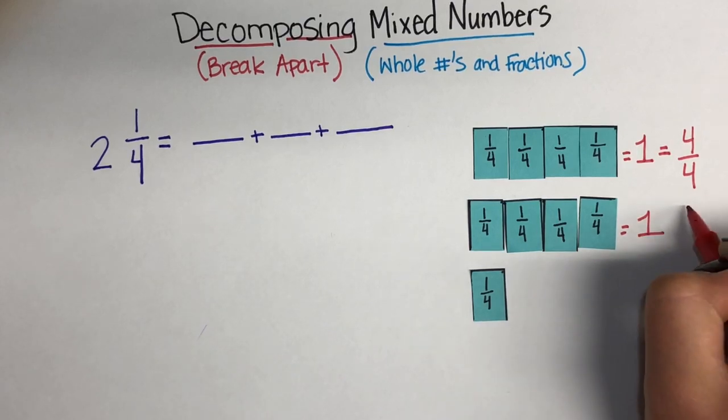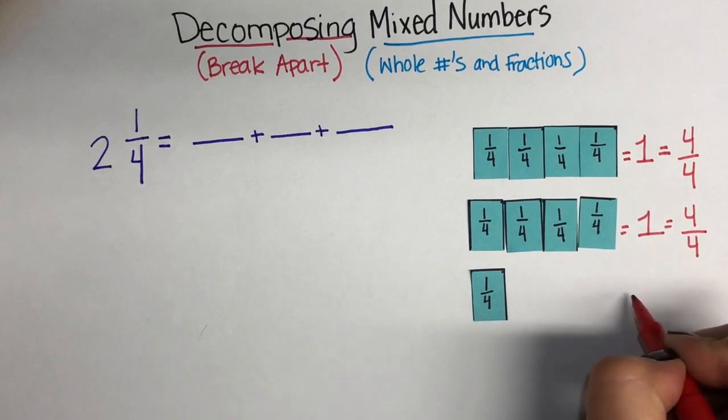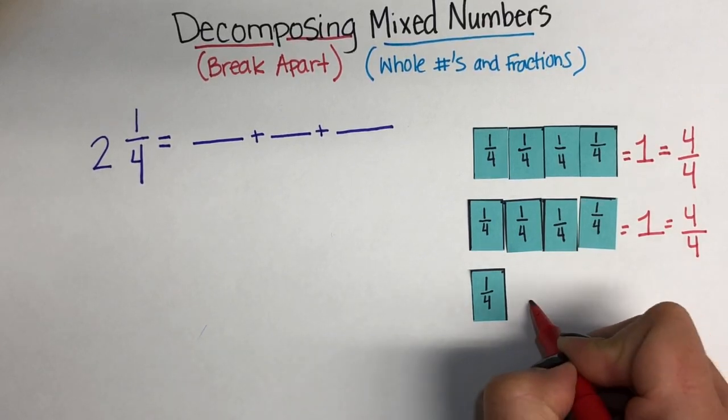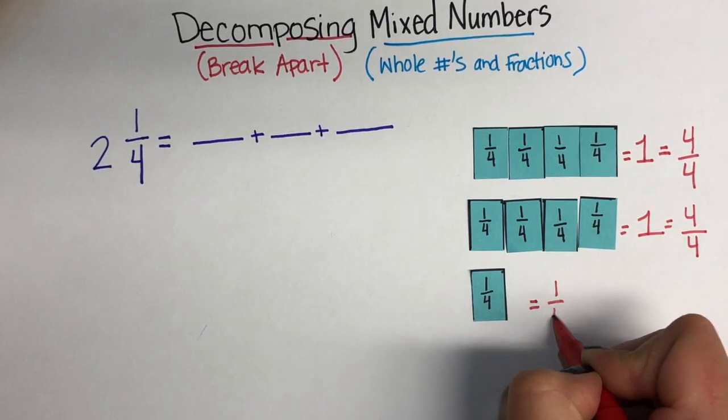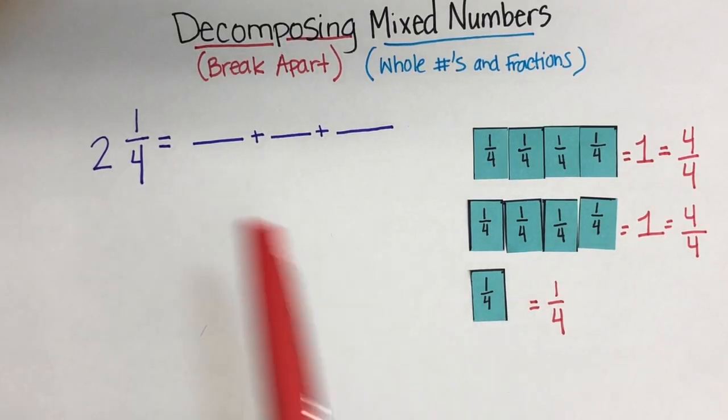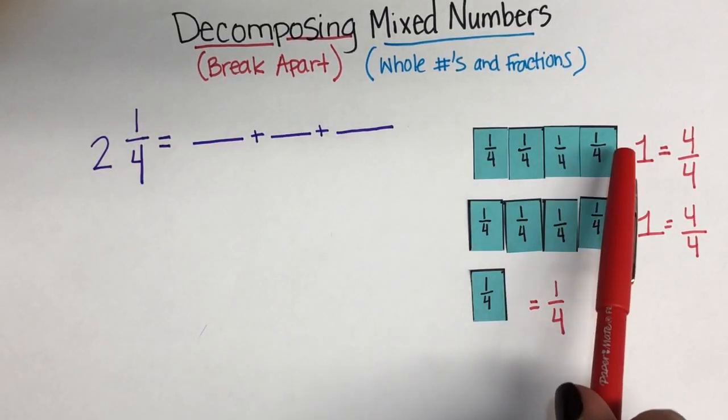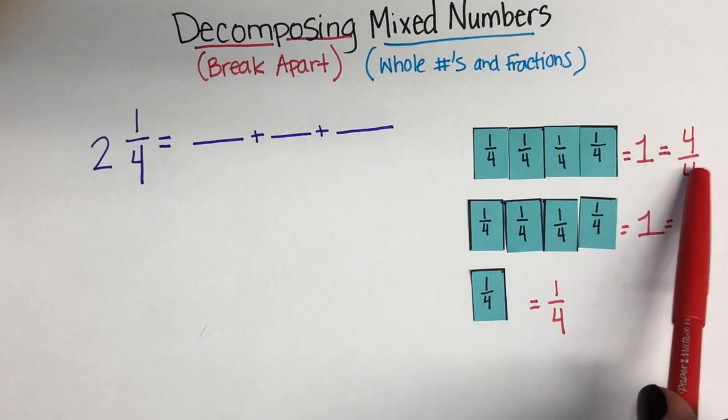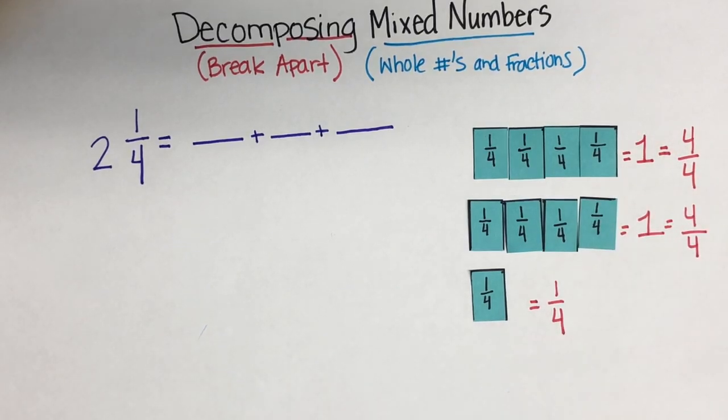And same thing, yep, you guessed it down here. One whole, which could also be called 4/4. This last part of the mixed number is our fraction 1/4, which is what's left over. So, we have our 2, 1, 2 wholes, also written this way. And then we have that 1/4 down there.